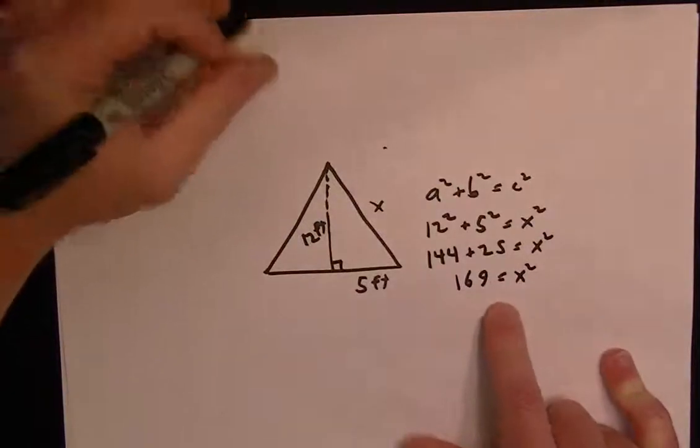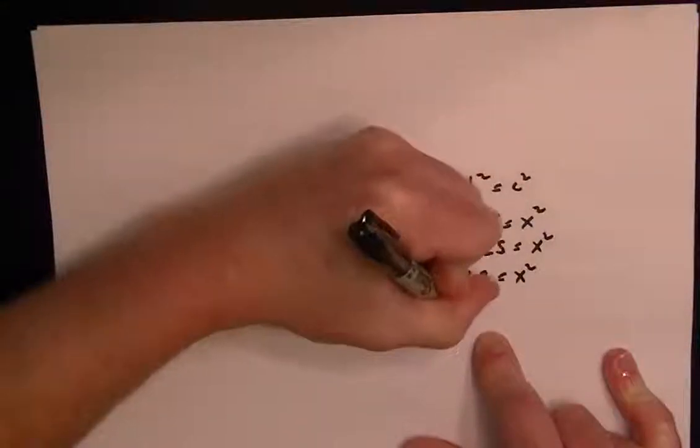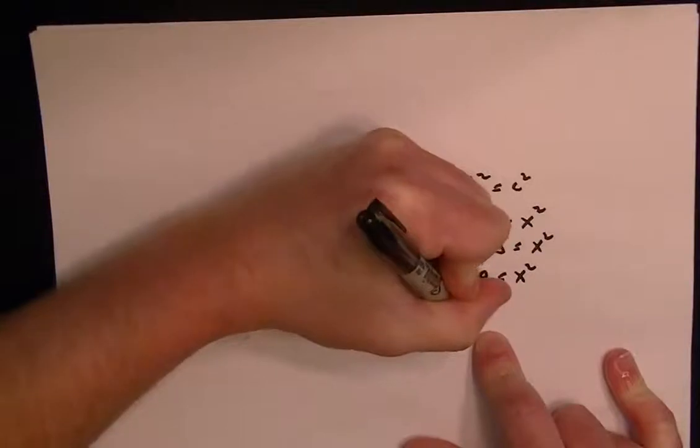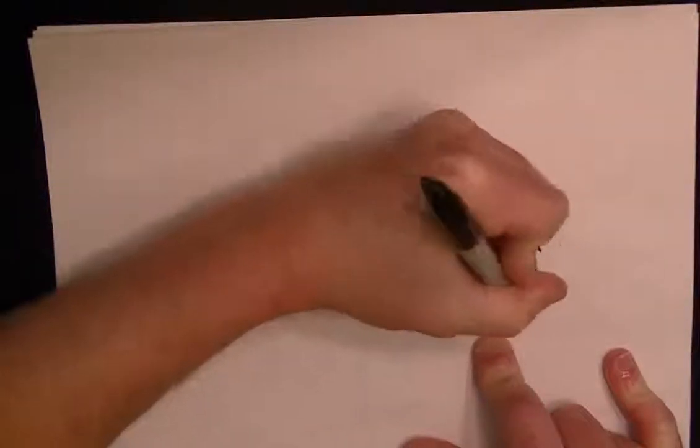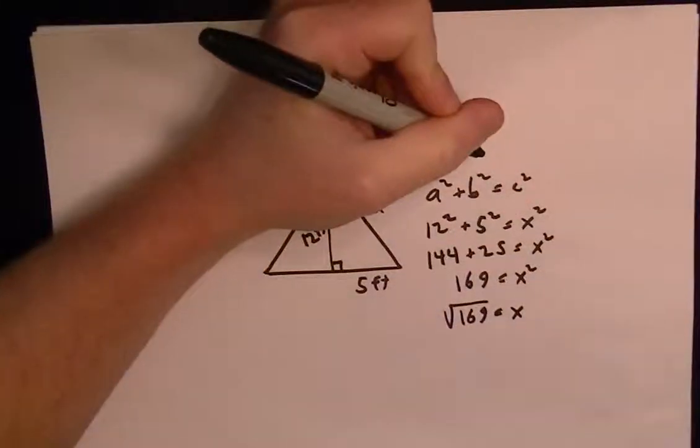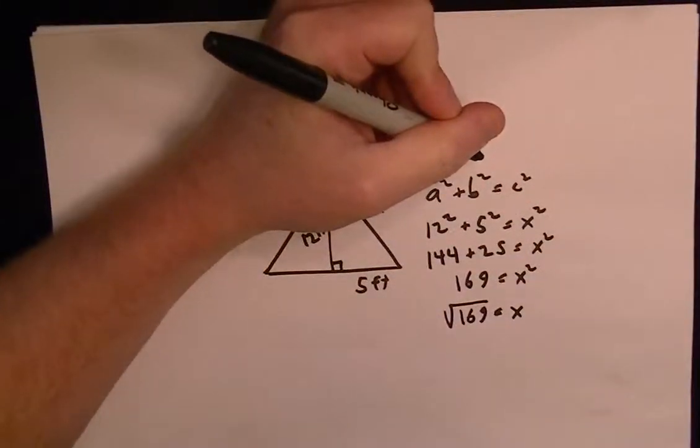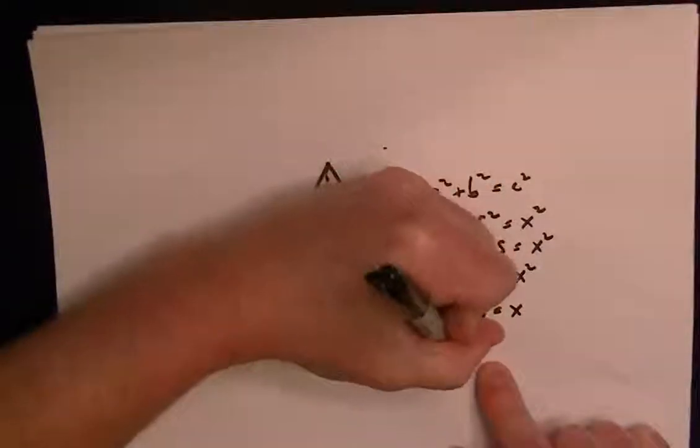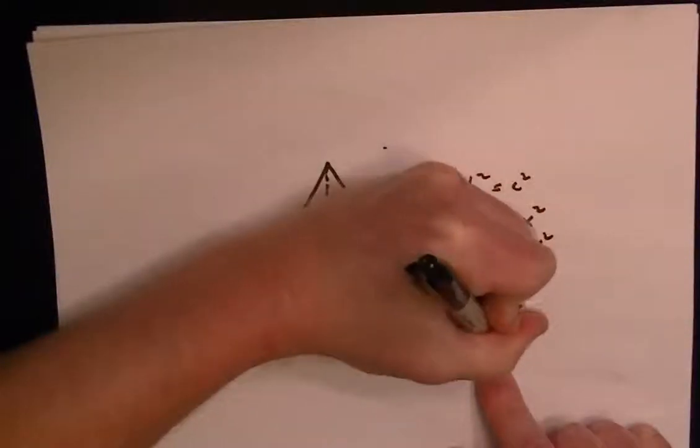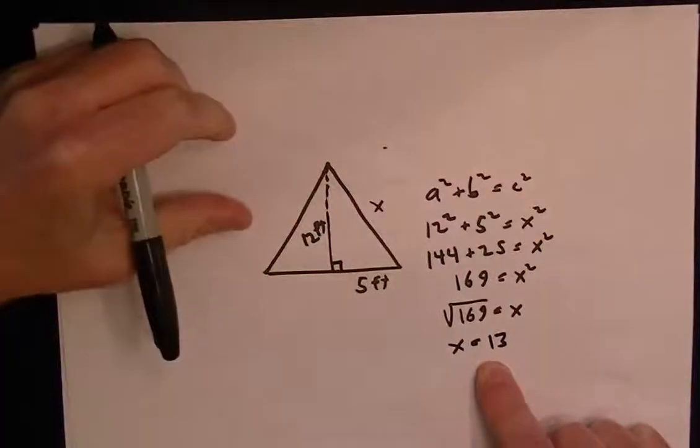To solve for x, you have to take the square root because x is squared. The square root of 169—I'll just put it in to be sure—is 13. So the answer here is 13.